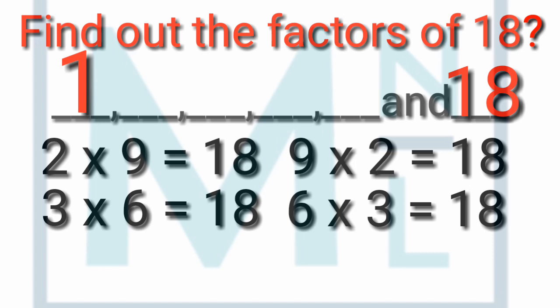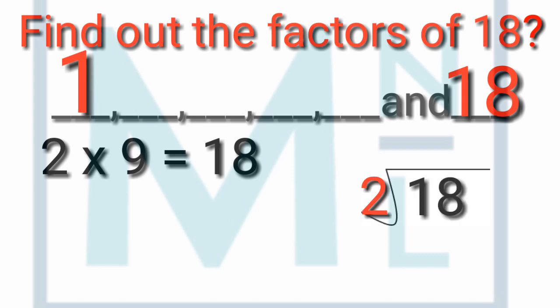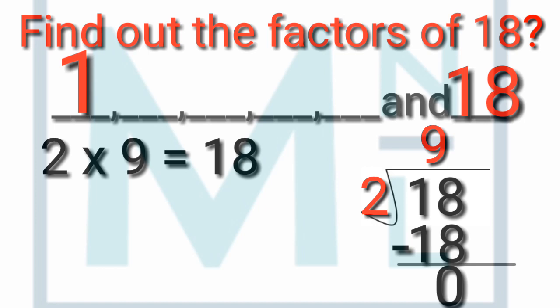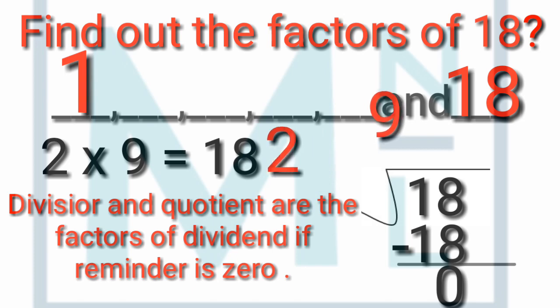Now we can also verify this with the help of division. We will verify each one by one — that 2, 3, 6, and 9 are factors or not. First of all, we verify 2. We will divide 18 by 2. 2 times 9 is 18, and after deduction the remainder is 0. There is a rule of factors: the divisor and quotient will be factors of the dividend if the remainder is 0. As you can clearly see here, the remainder is 0, so 2 and 9 are factors of 18.